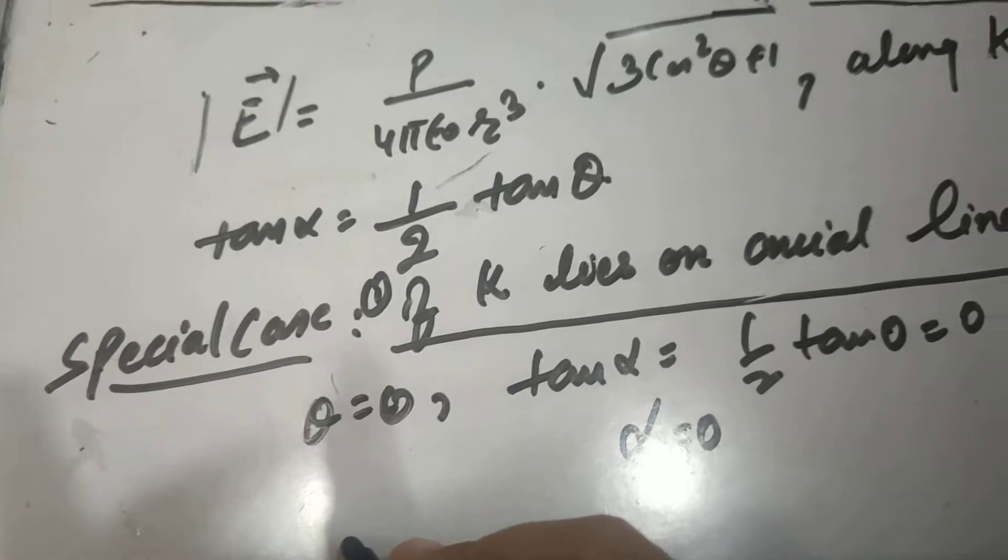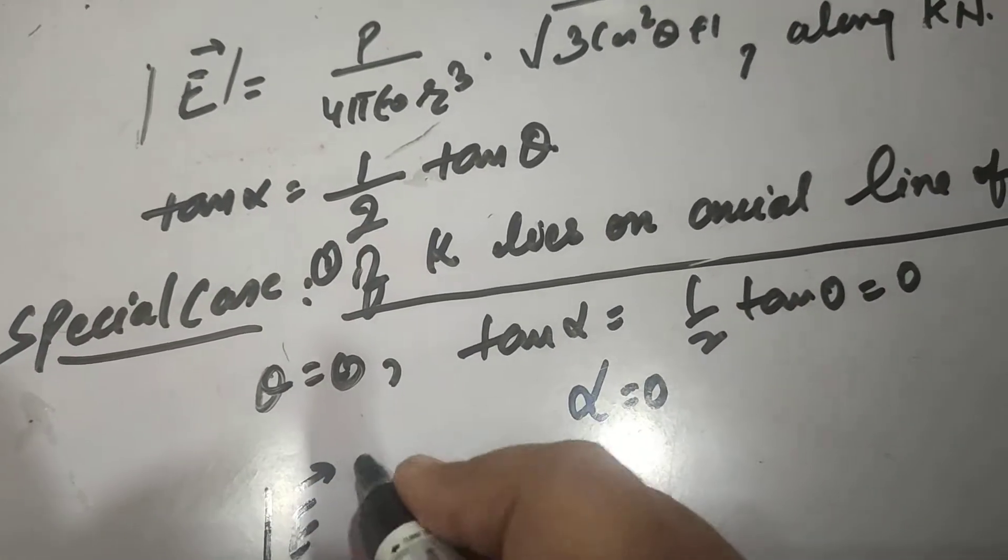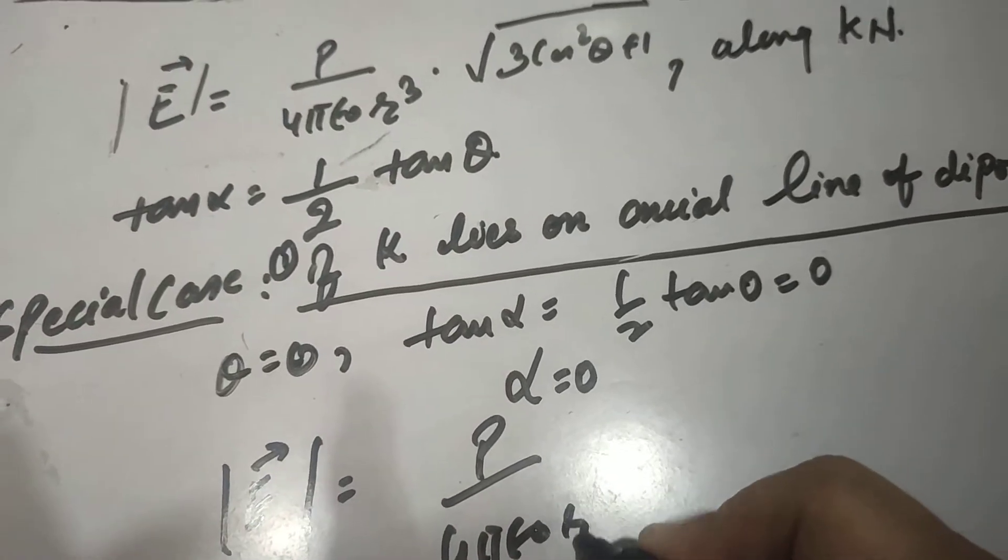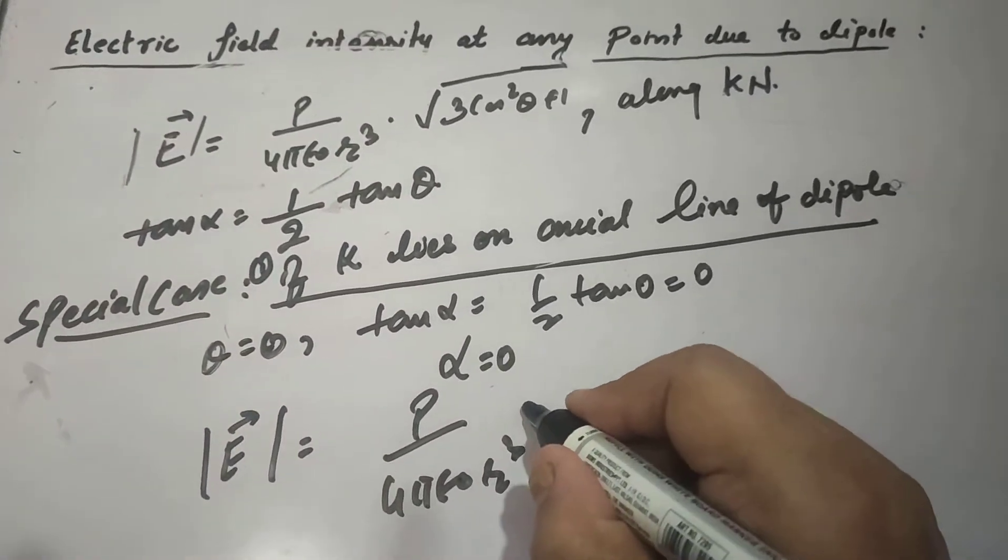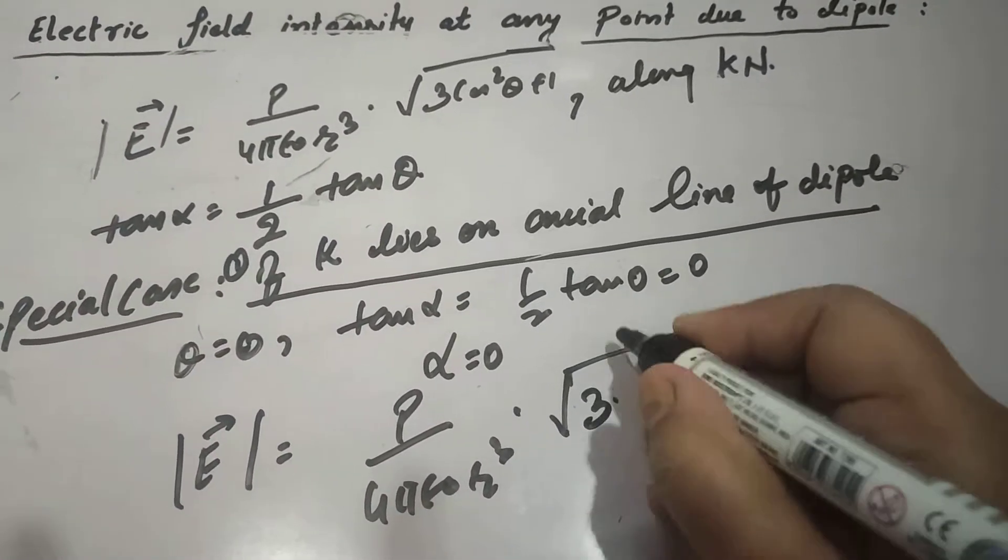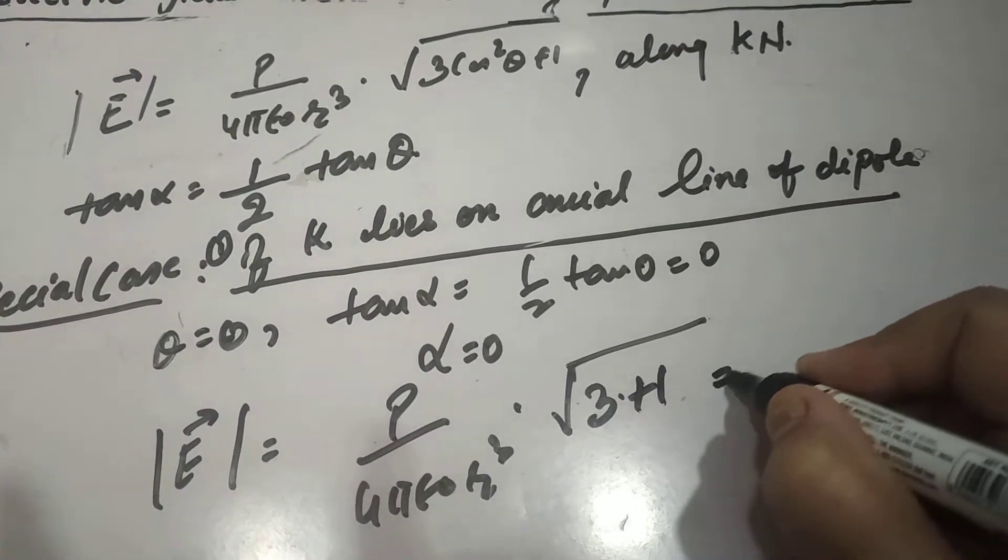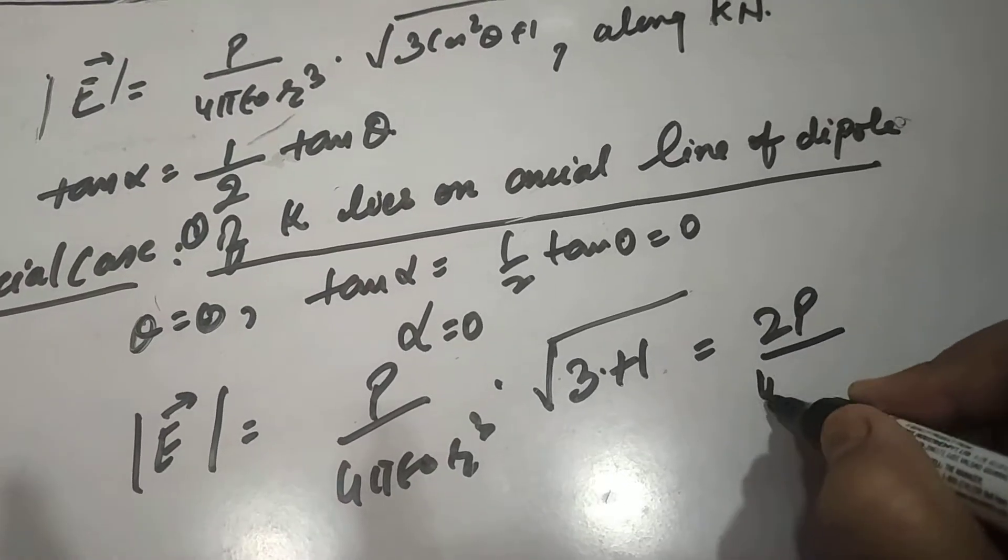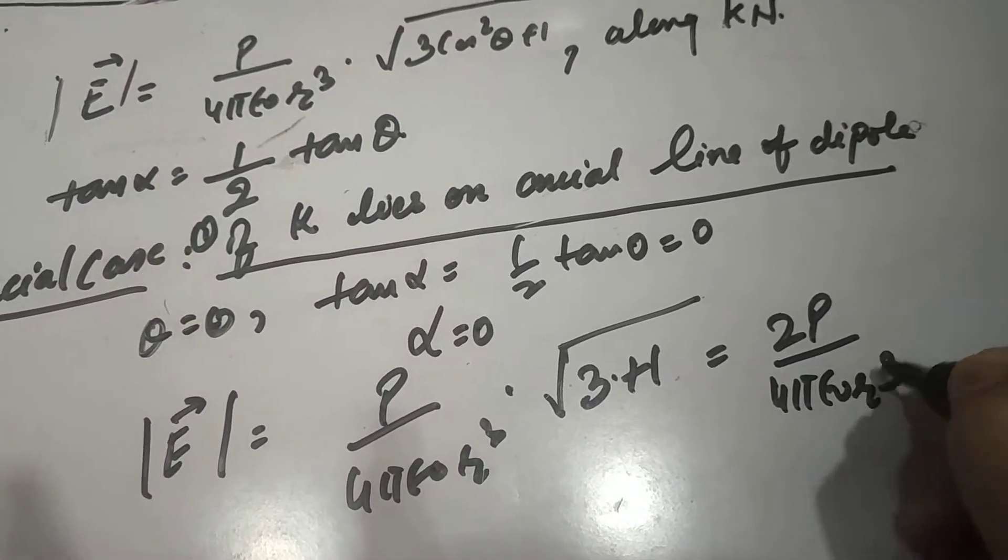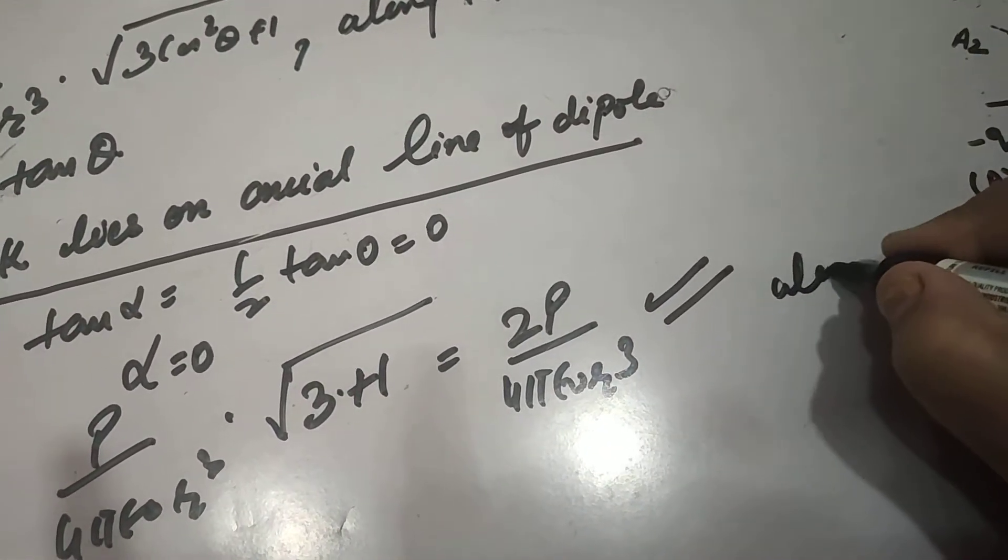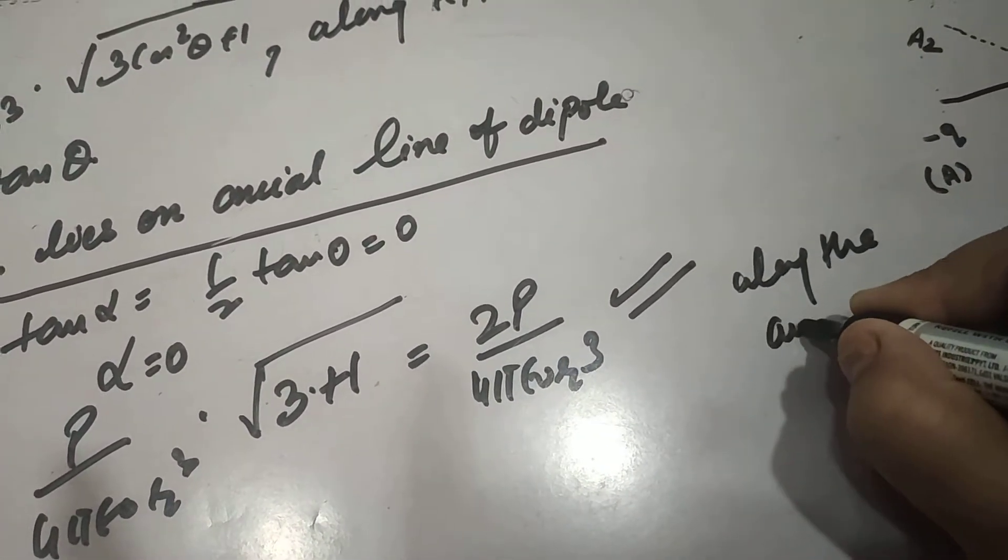And the value, if we want to calculate E vector, is equal to P upon 4 pi epsilon naught R cube. You can see here root 3. Cos square theta, cos square 0 is 1, so 3 plus 1, it becomes 2P upon 4 pi epsilon naught R cube, which is the exact value and direction is along the axial line.